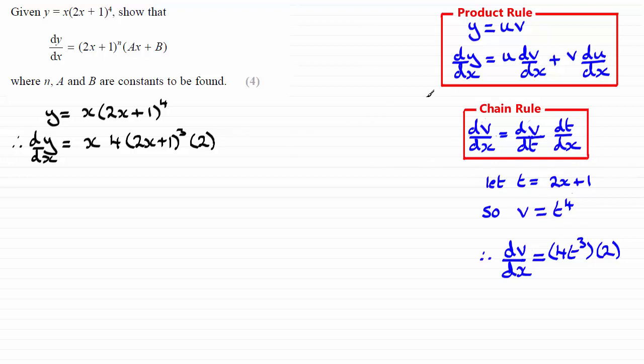And then, by the product rule, it's plus. And then we've got the v part, which is the 2x plus 1 to the power 4.